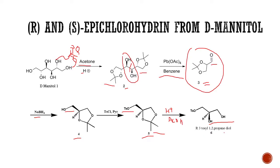Now, this R-3-tosyl-1,2-propanediol is a very important starting material, or important intermediate, for the synthesis of epichlorohydrin as it has OTs over here and OH over here.